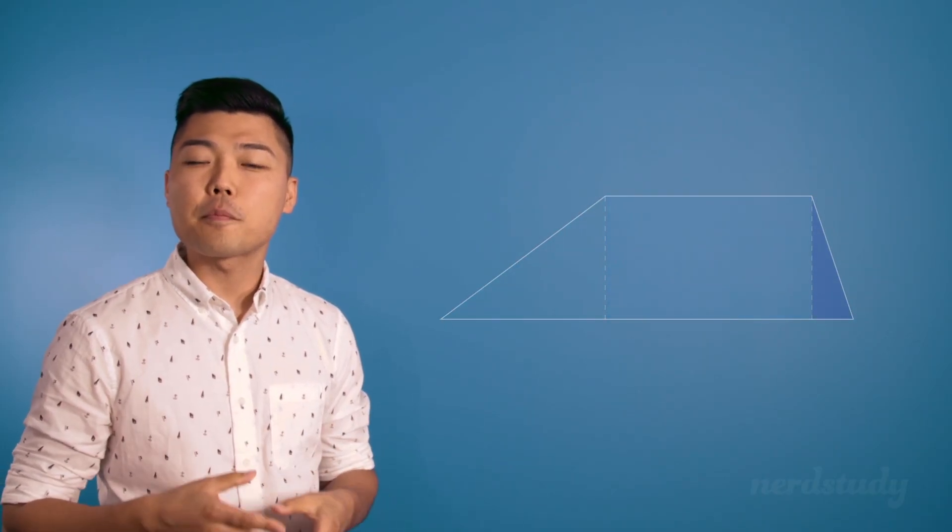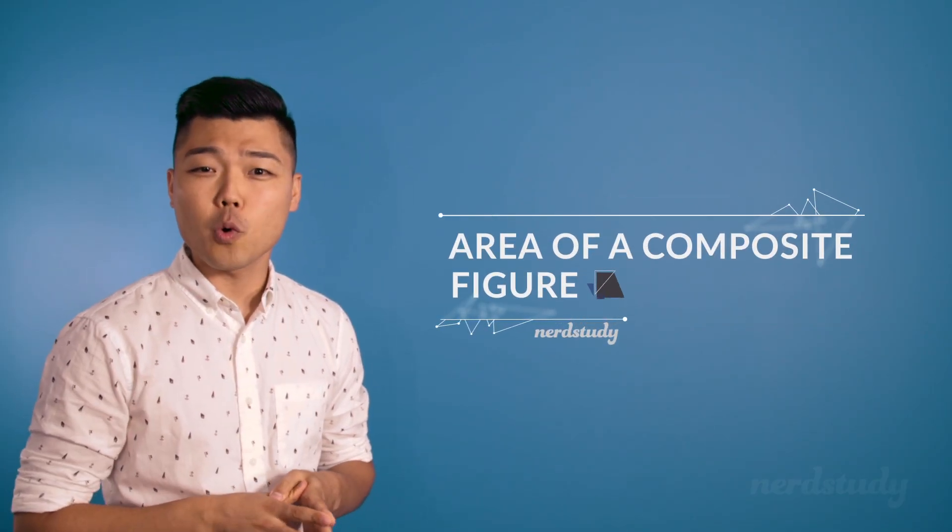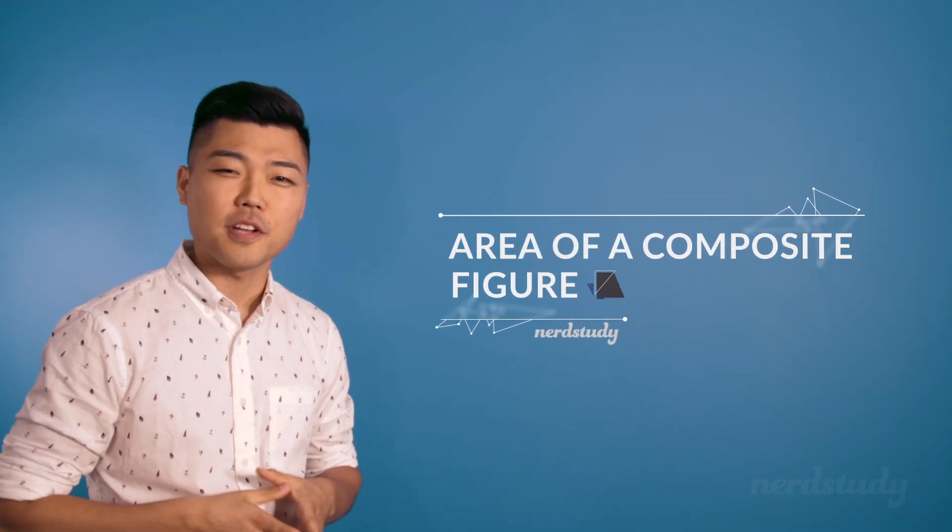Great so finding the area of a composite shape is not that difficult. We just need to know exactly how to get the area of the simple shapes and then calculate the addition of each of the shapes areas to arrive upon the final area of the composite figure. So that's it for this lesson make sure to practice some questions and we will see you in the next one.